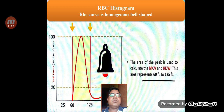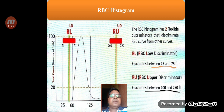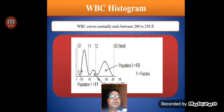In the RBC histogram there are basically two discriminators which discriminate this curve from others. The first discriminator is called the RL or lower discriminator, and the second is called the RU or upper discriminator. The RL fluctuates between 25 to 75 femtolitres, while the RU fluctuates between 200 and 250 femtolitres.